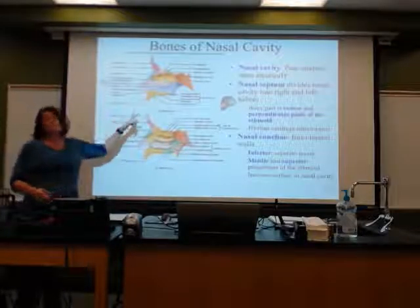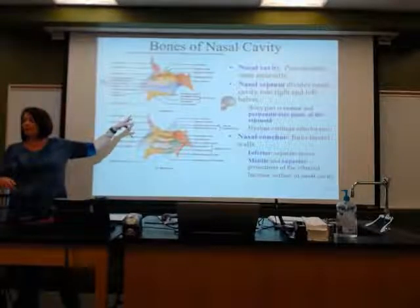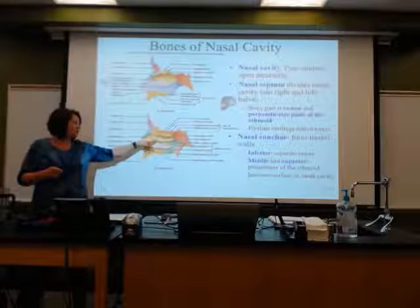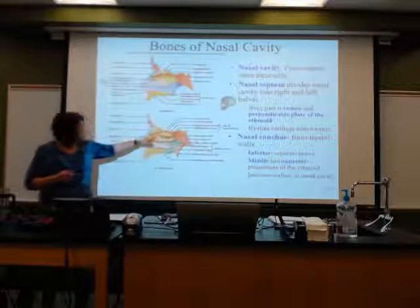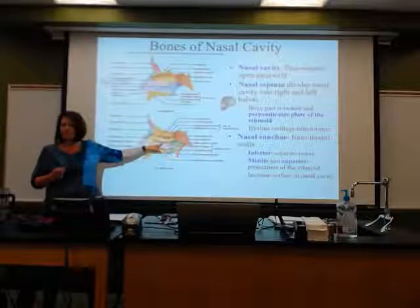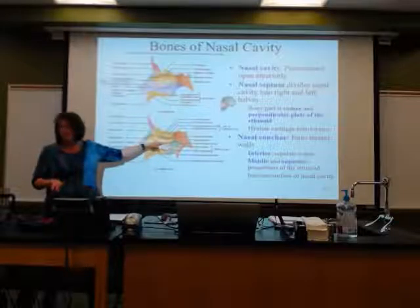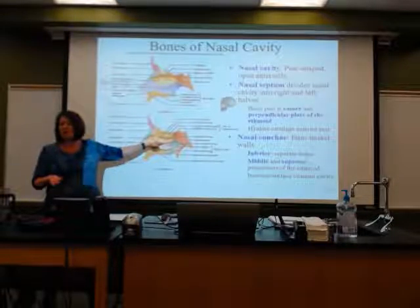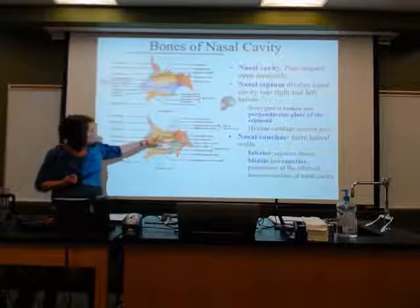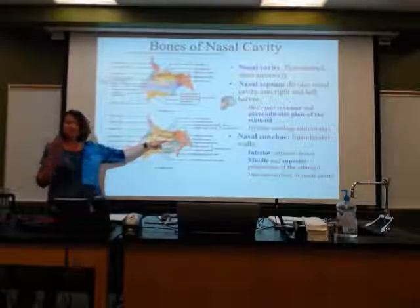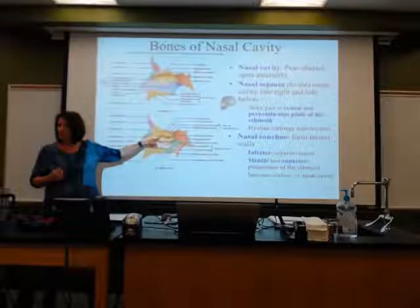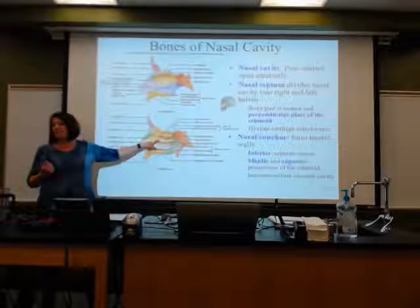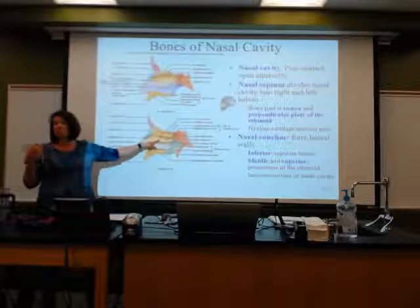Bones of the nasal cavity. One of the things I want to point out here — when we get into the special senses, these little flaps that we see here are called the conchae. What does that make you think about? A conch shell. They kind of have a little flip like the conch shell does. We're going to come back to that — it's going to come back to us in part two when we talk about the special senses. Here are the bones that are going to make up the nasal cavity.